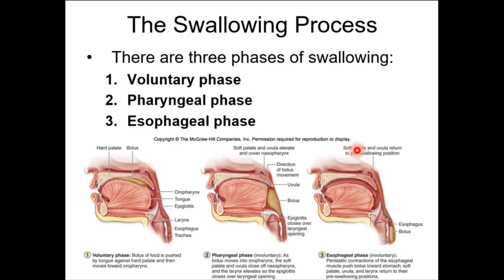Swallowing involves both skeletal muscle and autonomic smooth muscle reflexes, so it's coordinated between voluntary and involuntary muscle — which means it can become problematic. The voluntary phase uses skeletal muscles: the buccinator holds food in the oral cavity while you press your tongue against the hard and soft palate, moving the bolus to the oropharynx. The pharyngeal phase involves pharyngeal constrictors and is reflexive. The esophageal phase utilizes peristalsis.